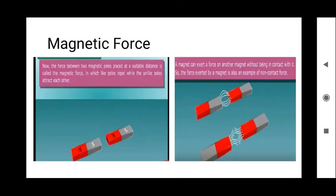The force between two magnetic poles placed at a suitable distance is called magnetic force. Like poles always repel and unlike poles always attract. A magnet can exert a force on another magnet without being in contact with it. Hence, the force exerted by a magnet is also an example of non-contact force — something you may have experienced while playing with magnets.